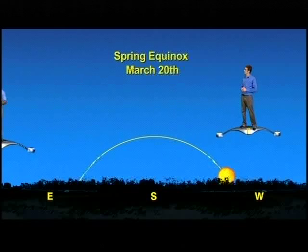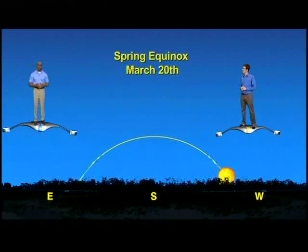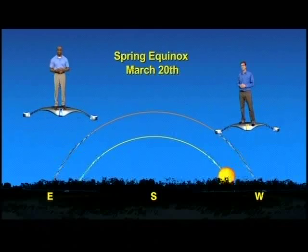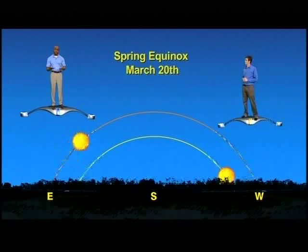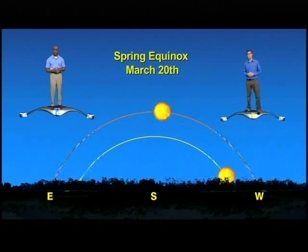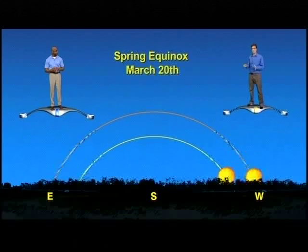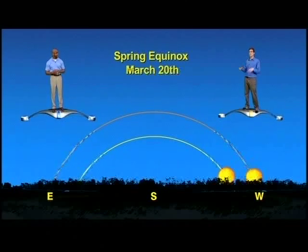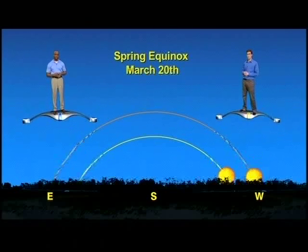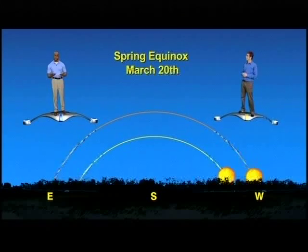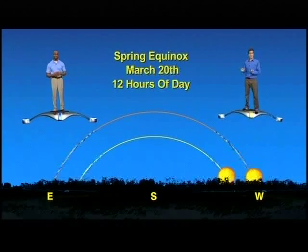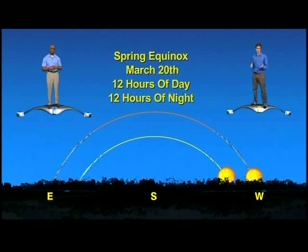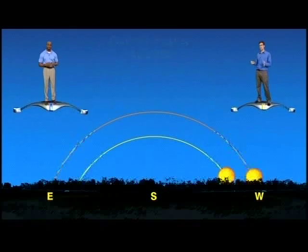Let's compare this to the spring equinox. Next year it will be on March 20th. Let's trace the pathway that the sun takes on this day. The sun will rise due east, reach its highest point above the southern horizon, and then set due west. Notice how the sun goes higher in the sky than it did in December. The higher the sun is, the more direct energy we get. And look at how much longer the sun was in the sky — 12 hours of daylight and 12 hours of darkness. Equal day, equal night. That's why they call it the equinox.